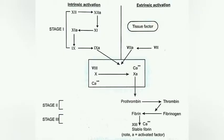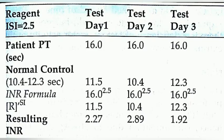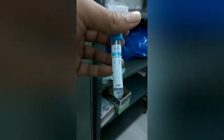The PT and INR test is required for the detection of bleeding disorders. In this chart you can easily understand the involvement of the different factors in this process. INR, or International Normalized Ratio, is calculated from the patient's PT in seconds and the mean of the normal range. This chart shows how to calculate the data associated with the INR.